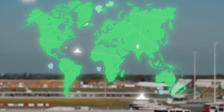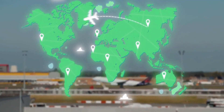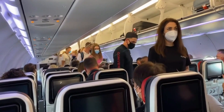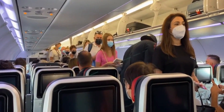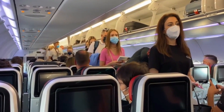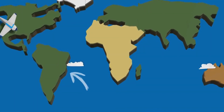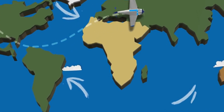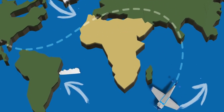The location of a hub can also influence the airline's route network. For example, if an airline's hub is located in a major city or tourist destination, it may prioritize flights to other major cities or tourist destinations to cater to the needs of its passengers. Additionally, if an airline has a hub in a particular region, it may have more flights to destinations within that region, as well as more connections to other regions through its hub.